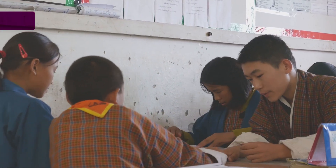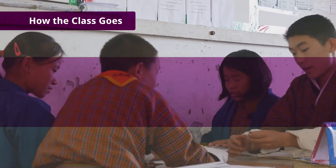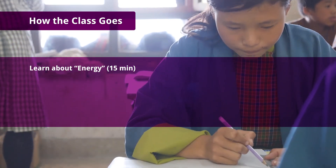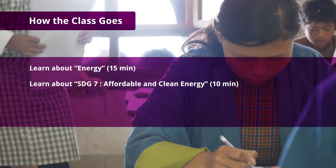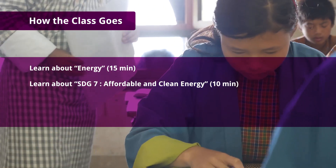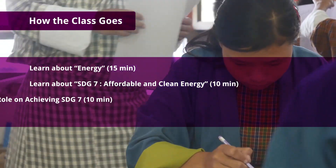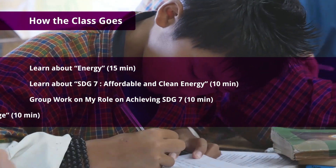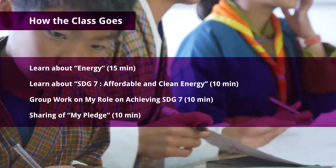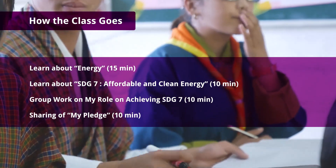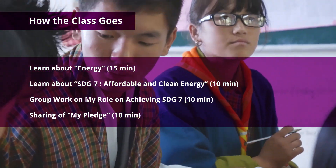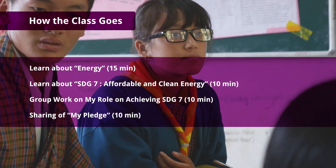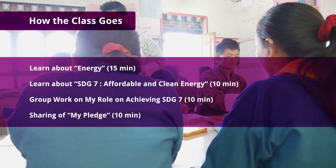From 45 minutes of class, the first 15 minutes is for learning about energy, and the next 10 minutes for learning about Sustainable Development Goal 7 — affordable and clean energy. In the following 10 minutes, students will work in groups to discuss their roles in achieving SDG 7. After that, they will share their plans with the class.